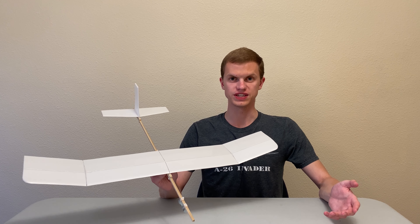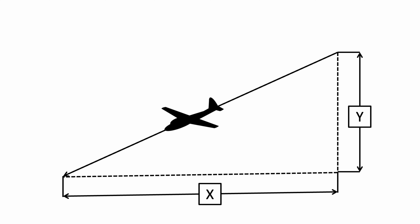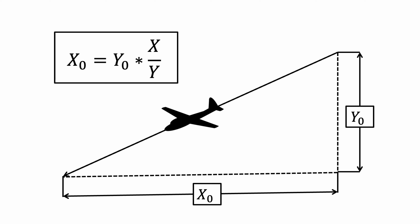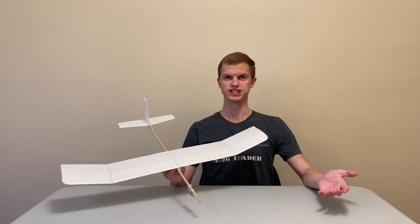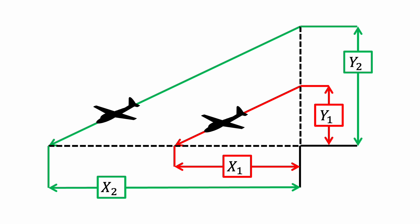Now that we understand the basic physics of glider flight, let's learn how to make our gliders fly as far as possible. When we throw a glider, it descends a given height y while also moving a horizontal distance x. By taking the ratio of x to y, we can find how much horizontal distance a glider covers for every increment of height lost — this is called the glide ratio. The horizontal distance a glider flies, x0, can be calculated by multiplying its starting altitude, y0, by the glide ratio. The obvious thing to do to make a glider fly further is to throw it from higher up, and here the glider shown in green flies further because it was launched from a greater height.